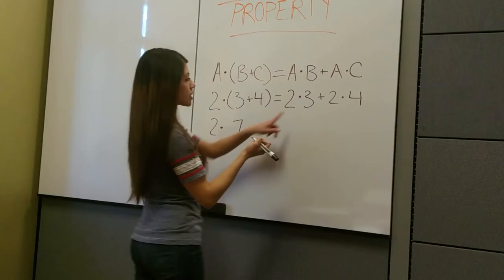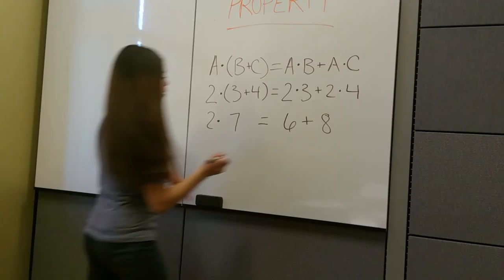3 times 2 is 6 and then 4 times 2 is 8. So then 7 times 2 is 14 and 6 plus 8 is 14.